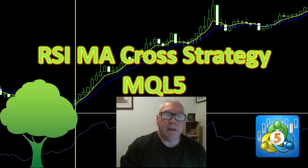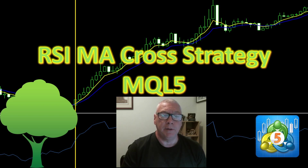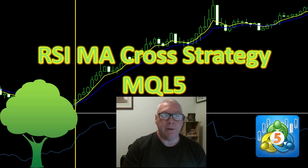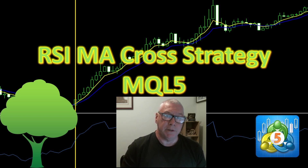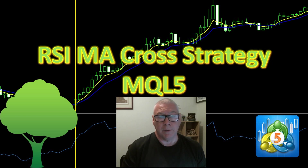Hello. Today I'm writing an expert advisor based on a comment that I received recently. The comment was to combine RSI overbought/oversold levels with a moving average cross. I'll explain the strategy in a moment. This video is for MetaTrader 5. I have a separate video on the same topic for MetaTrader 4 and I'll leave a link in the description and a card on screen pointing you to the MetaTrader 4 video.